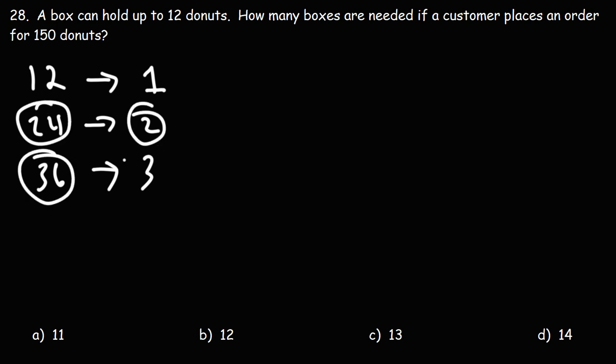If you divide 36 by 12, you get 3. So by taking the total number of donuts, dividing it by 12, that's going to help us see how many boxes we need. So let's do long division. 12 is going to be the divisor, 150 is the dividend.